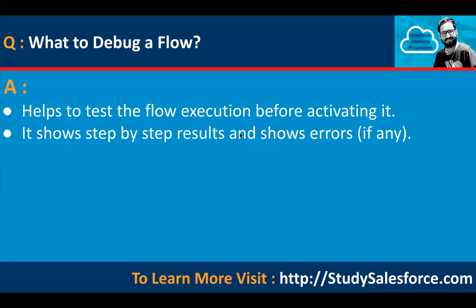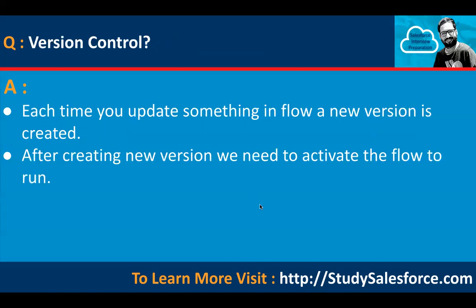How to debug a flow? It helps to test flow execution before activating it. It shows step-by-step results and shows errors if there are any. What is version control? Each time you update something in a flow, a new version is created. After creating a new version, we need to activate the flow to run.